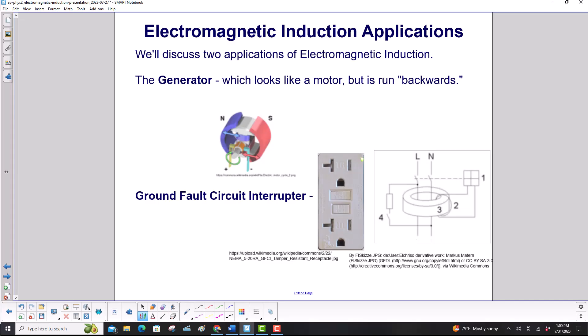Now we'll discuss some applications of electromagnetic induction. First will be the generator, and that looks like a motor, which is why we started this topic off with the motor, but it's run backwards. And the ground fault circuit interrupter, very important for electrical safety in the home, especially near water.